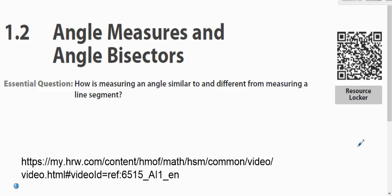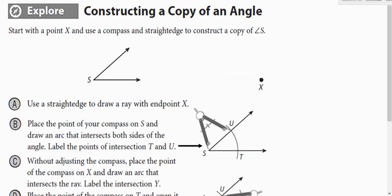Now we're going to look at angle measures and angle bisectors. So first we're going to learn how to construct a copy of an angle.